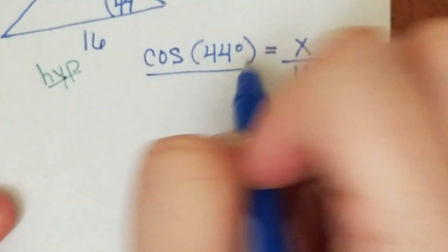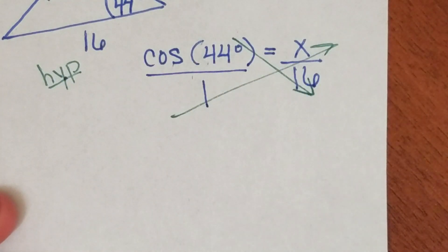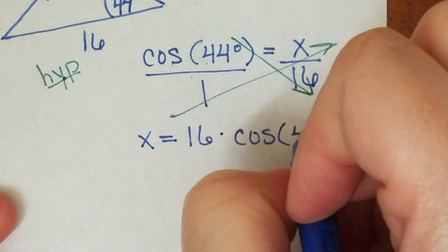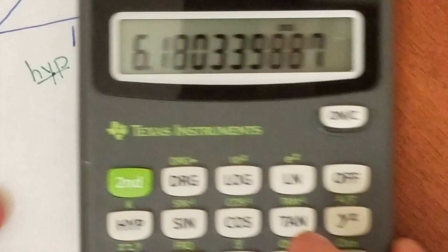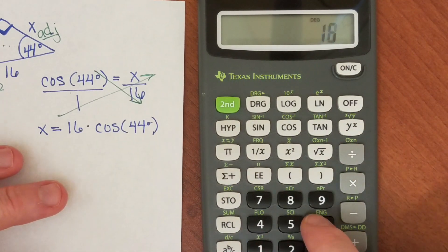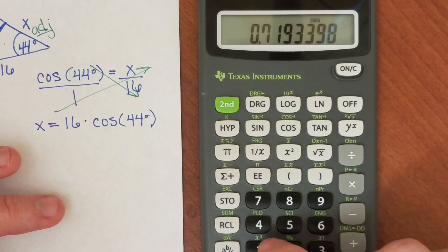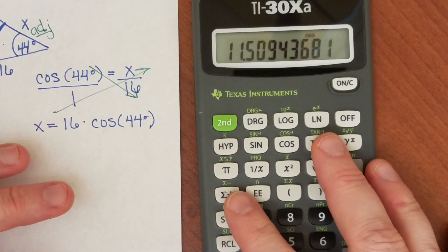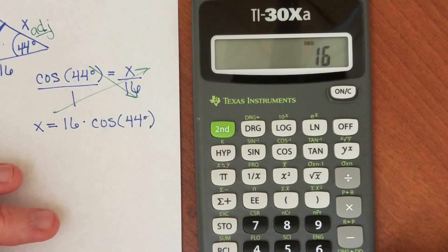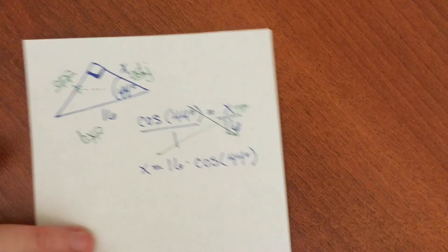I'm going to turn this into a proportion and cross-multiply. Now I have: x equals 16 times the cosine of 44 degrees. If I plug that into my calculator — I'll type in 44, hit cosine, then multiply by 16 — and hit enter. Rounded to one decimal place, that's 11.5. So that's my approximate answer.